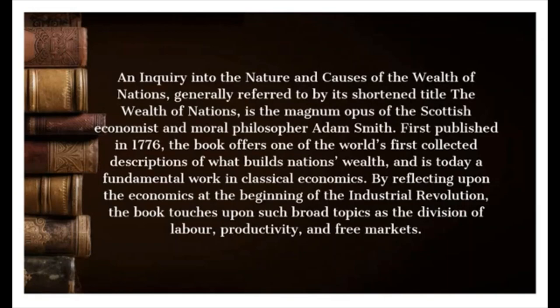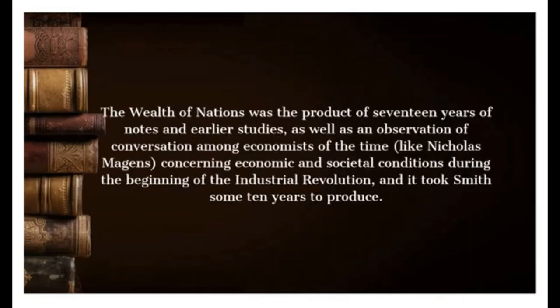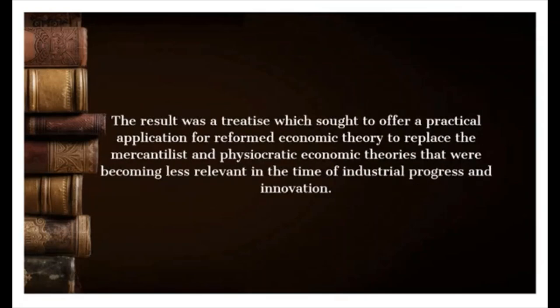The book touches upon such broad topics as the division of labor, productivity, and free markets. 'The Wealth of Nations' was the product of 17 years of notes and earlier studies, as well as observation and conversation among economists of the time, like Nicholas Mergens, concerning economic and societal conditions during the beginning of the Industrial Revolution, and it took Smith some 10 years to produce. The result was a treatise seeking to offer a practical application for reformed economic theory to replace mercantilist and physiocratic theories becoming less relevant in the time of industrial progress.